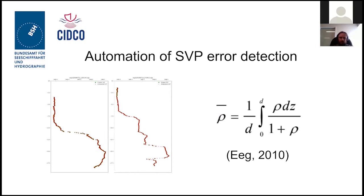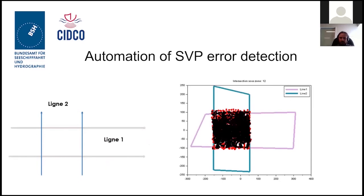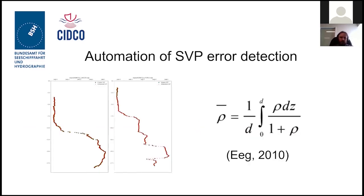Now I come to what Jean-Guy was talking about in his presentation regarding detecting errors in sound velocity. Here we see two different sound velocity profiles, and when we talk about error, what we mean is the average error represented by an integral — it's simply the difference between the two profiles, integrated across the depth of the profile, and it is relative to one of the profiles. So the integral is the average relative error. If we have two profiles, we can directly calculate this integral and obtain the error.